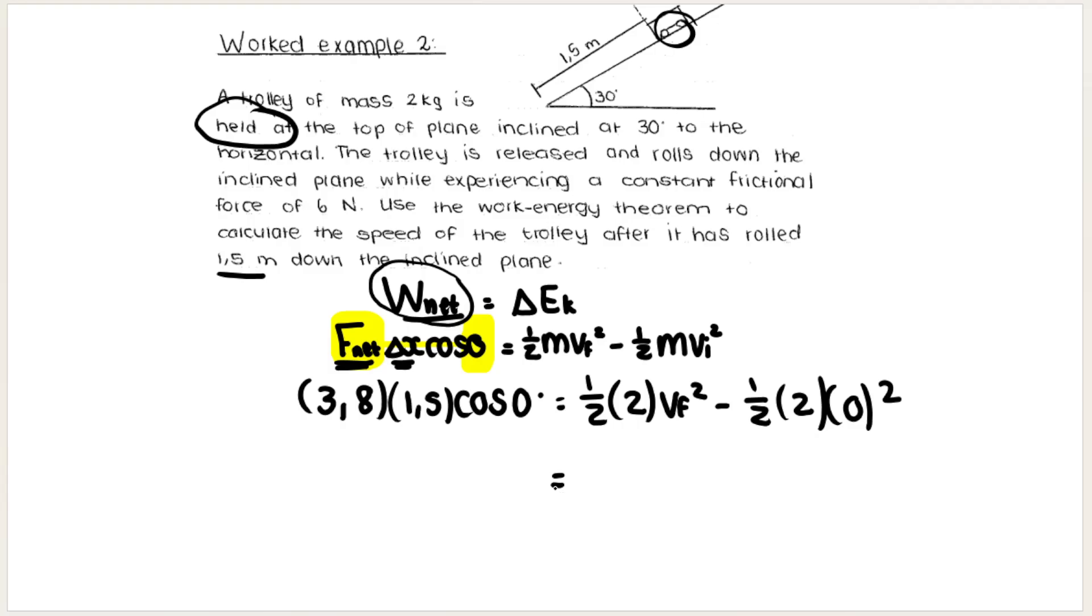So you work this out on your calculator, you get 5.7 on the side. Then ½ of 2 is 1, so we got 1 vf² on this side and this term is zero. And then we square root 5.7 and that gets me my final velocity or my final speed.